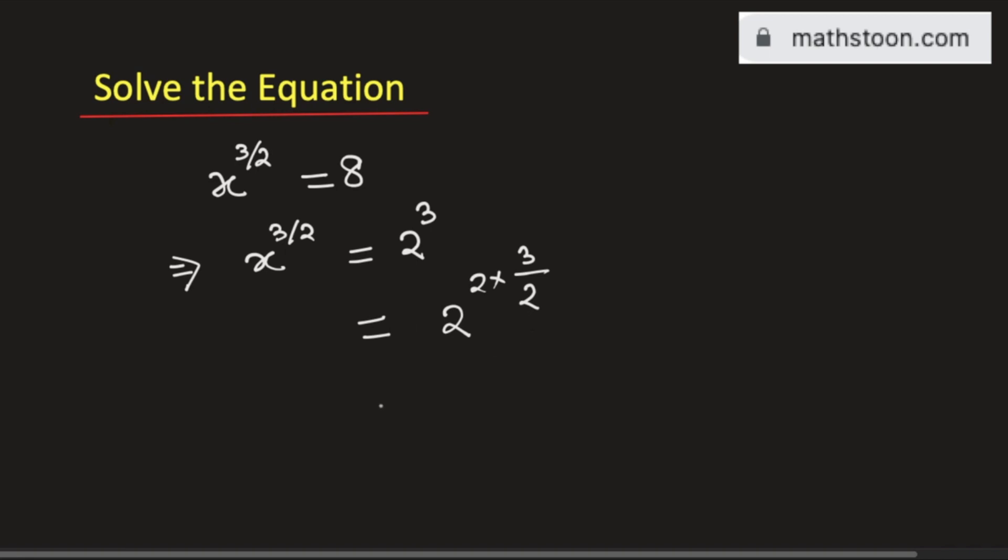And this can be simplified as 2 square whole to the power 3 by 2. So finally we get x to the power 3 by 2 is equal to 4 to the power 3 by 2.